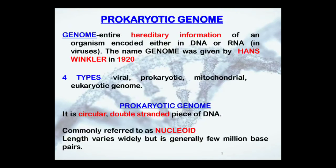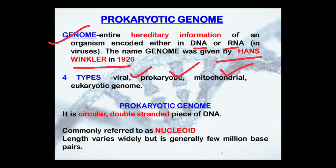Let us go into the detail of the prokaryotic genome. The genome is the entire hereditary information of an organism encoded either in DNA or RNA. The name genome was given by Hans Winkler in the year 1920. There are four types of genome: viral, prokaryotic, mitochondrial, and eukaryotic genome.